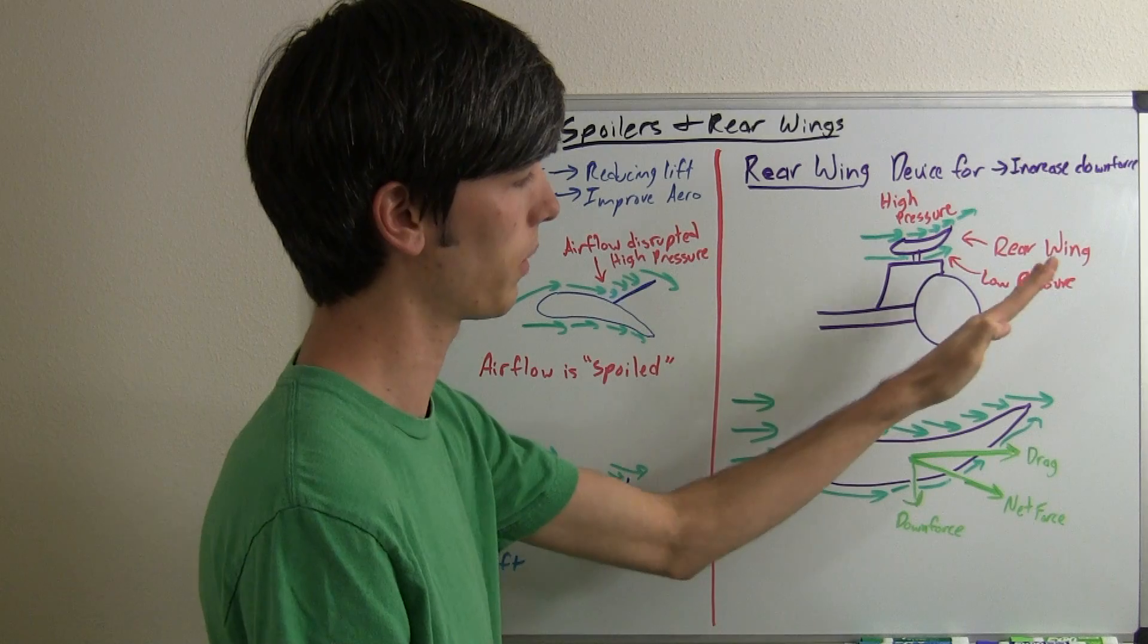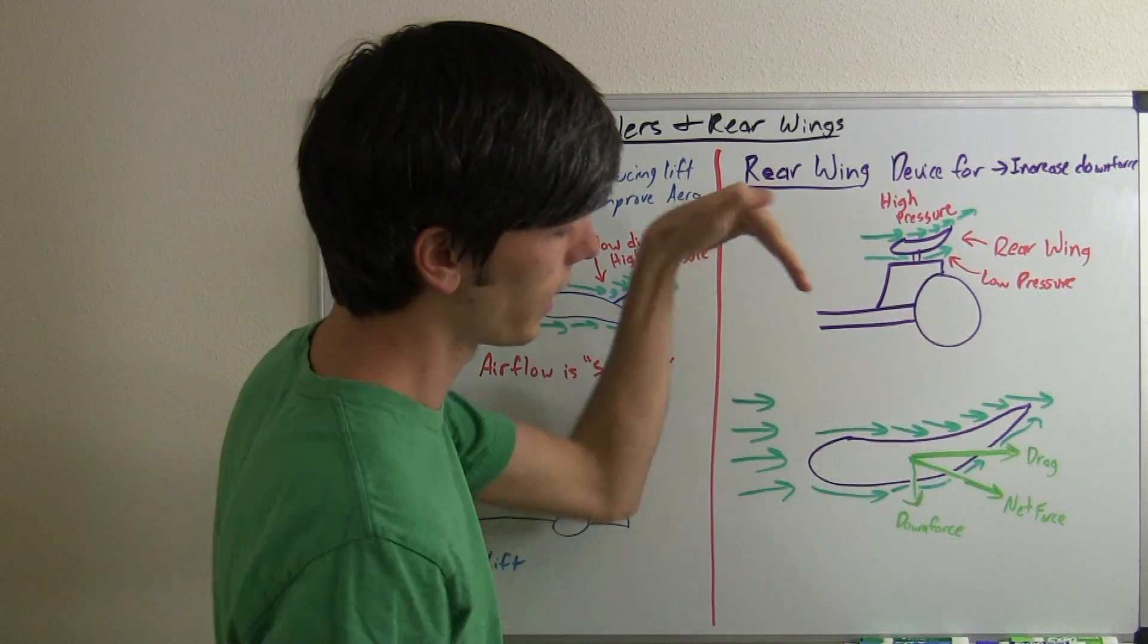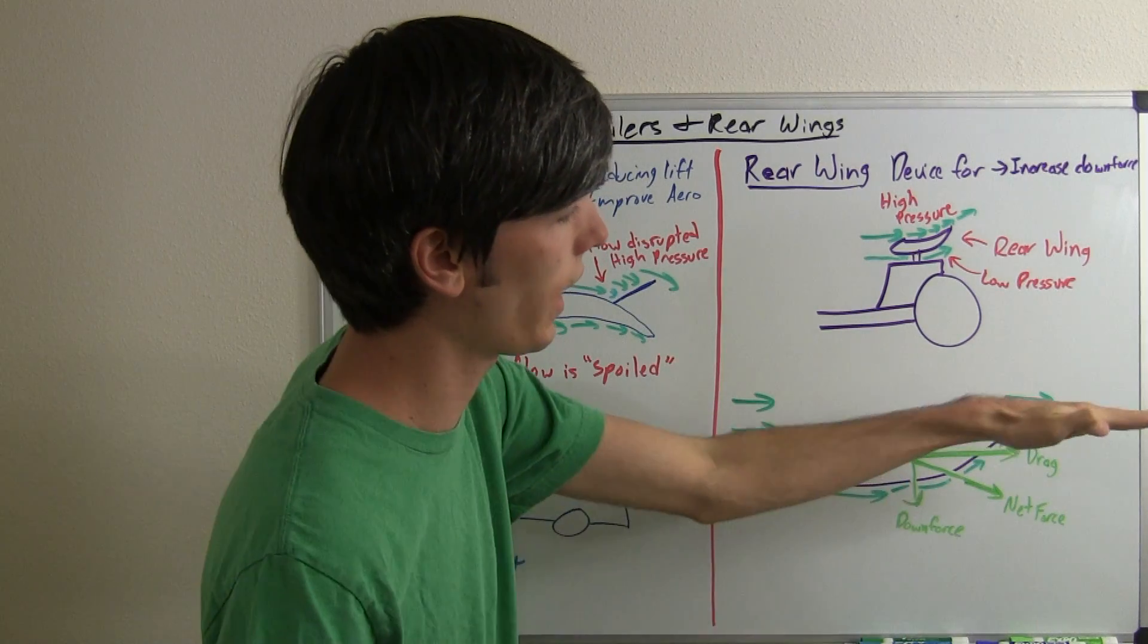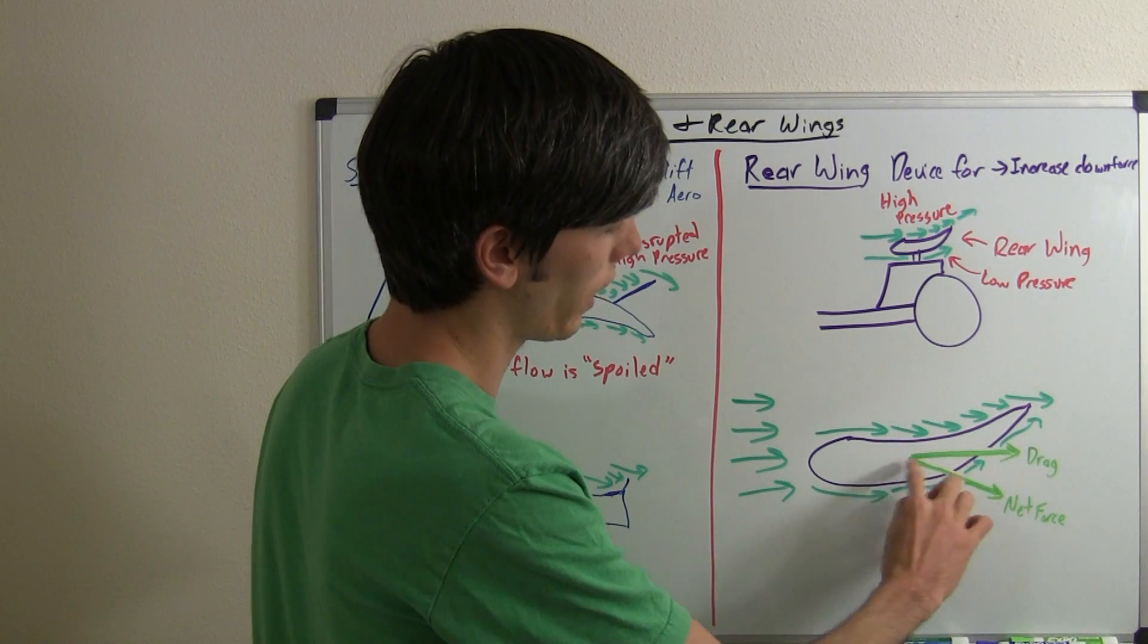So you can kind of think of it like a slanted plate and you've got air hitting that slanted plate. And as that air hits the slanted plate it has a downward force and a horizontal force pushing it back. So the net force pushing down has those two components.